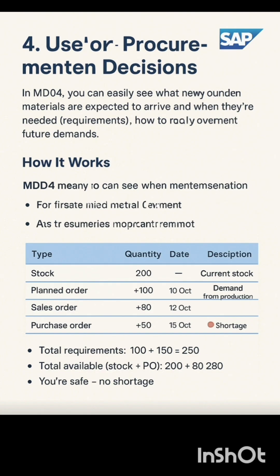For example, if you have 200 units in stock, 150 required for a sales order, and 100 for production, MD04 instantly shows whether you will face a shortage or not — helping you act before production stops.